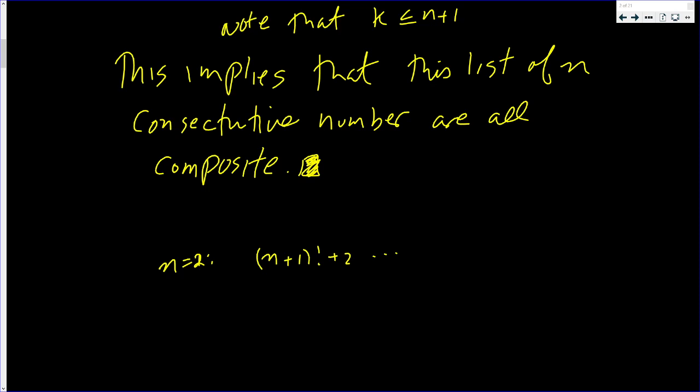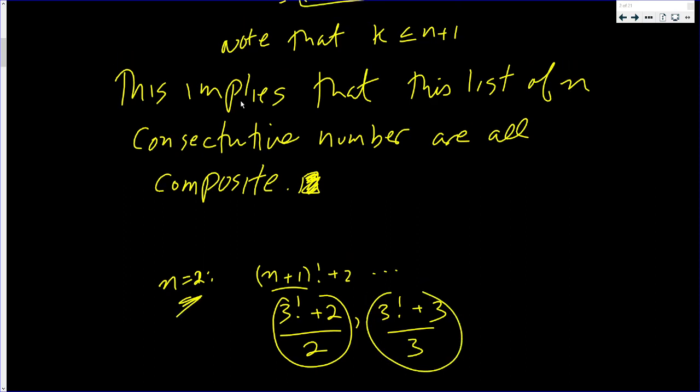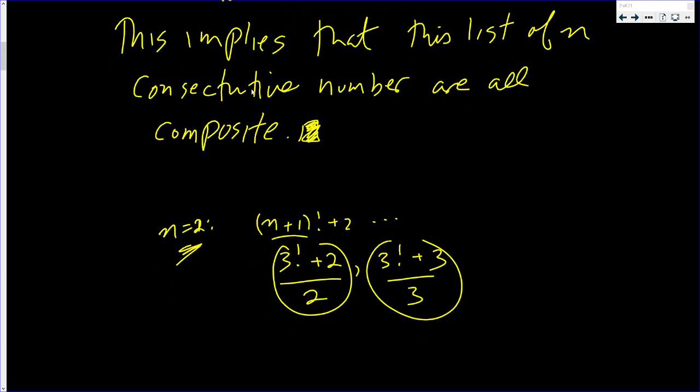So if n is bigger than 1, that means n is 2. So this would actually be 2+1 is 3. So you'd have 3! + 2 and 3! + 3. And 2 goes into this number. That is, 2 divides this number. And 3 divides this number. So I found 2 consecutive composite numbers.